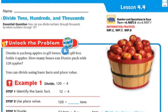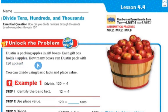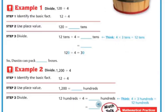Let's unlock the problem. Dustin is packing apples in gift boxes. Each gift box holds four apples. How many boxes can Dustin pack with 120 apples? You can divide using the basic facts and place value.